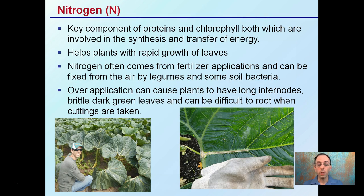The first one is nitrogen. Looking at a fertilizer bag, the three numbers indicated are nitrogen, phosphorus, and potassium. Nitrogen is a key component of proteins and chlorophyll, both involved in the synthesis and transfer of energy. It helps plants with rapid growth of leaves, giving that satisfaction of adding fertilizer and seeing the plant grow. Nitrogen often comes from fertilizer applications and can be fixed from the air by legumes and also some soil bacteria.